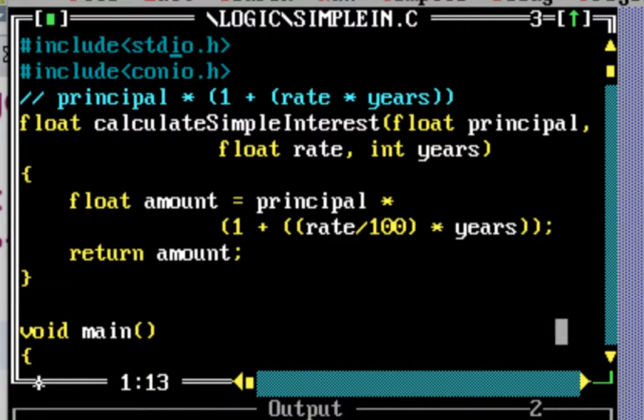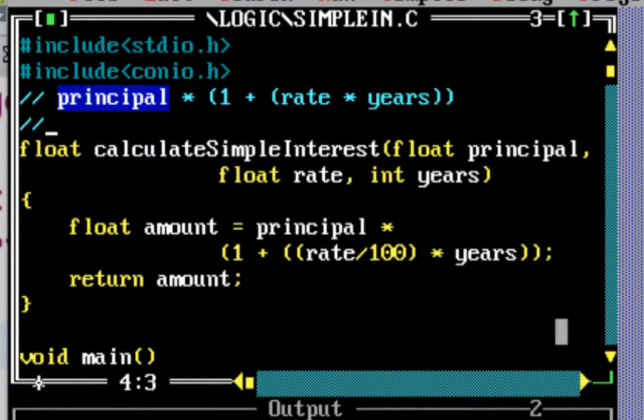In this video let's look at how to write a program to find out the simple interest. Simple interest is over a principle, that's basically how much amount is lent. For example, let's say I have lent thousand rupees or thousand dollars, whichever currency you are comfortable with.